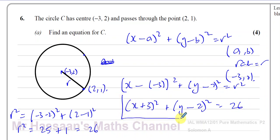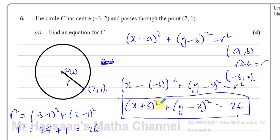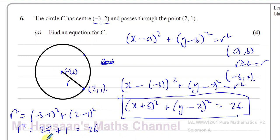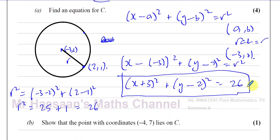So the equation of the circle is x plus 3 squared plus y minus 2 squared equals 26. You can leave it in this form — it's perfectly fine. This is the form where we can read the center and the radius straight away. That's the answer for part A.